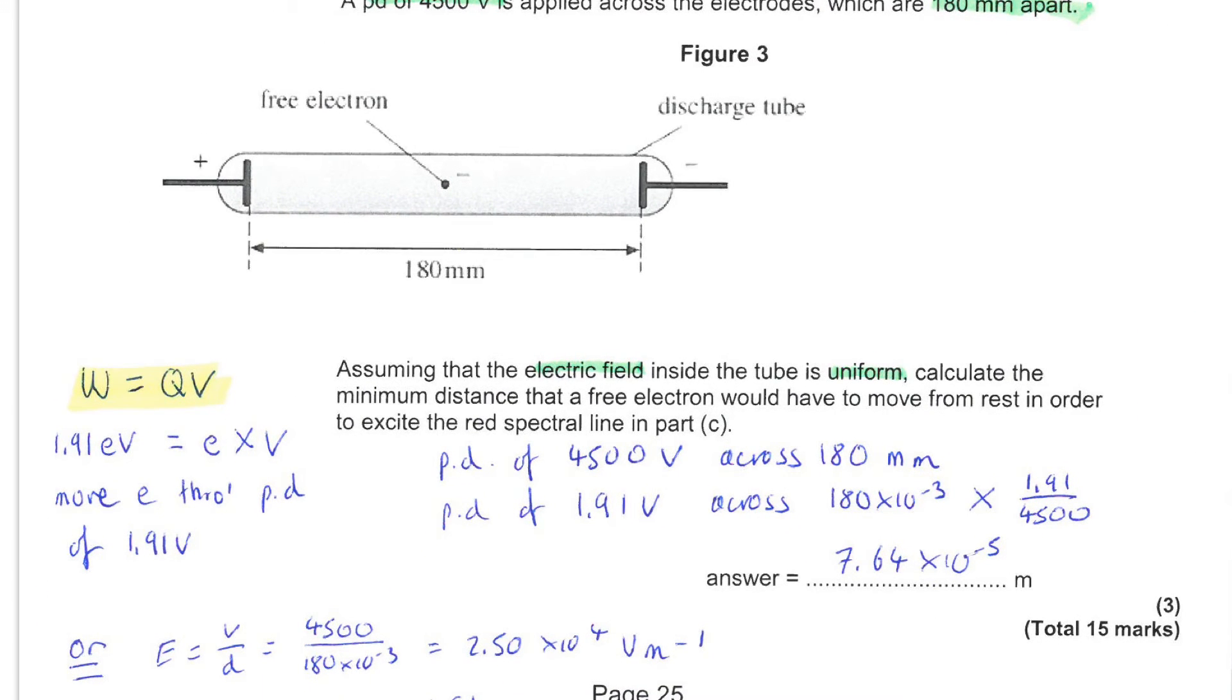Next, we look at the context of an illuminated shop sign with a neon discharge tube within it. You are told that a potential difference of 4,500 volts is applied across the electrodes, across these two points here, and these electrodes are 180 millimeters apart. You can assume that the electric field inside the tube is uniform, and you are asked to calculate the minimum distance that a free electron would have to move from rest in order to excite the red spectral line that we referred to previously.